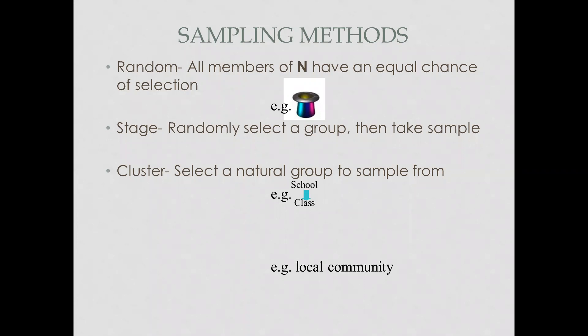The second type is stage or state sampling, where you randomly select a group and then take the sample. In this method, you have the authority to substitute someone with another person at any point. In other sampling methods, you cannot change anything. But in state sampling, you may do so with a particular justified reason — it's not arbitrary.